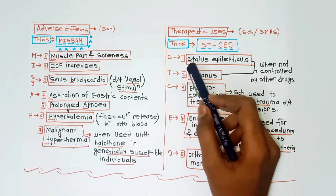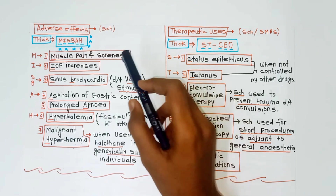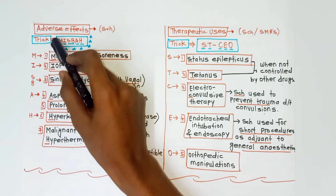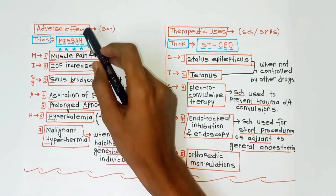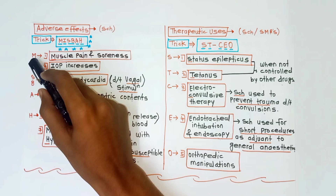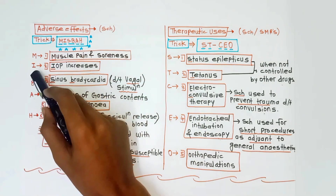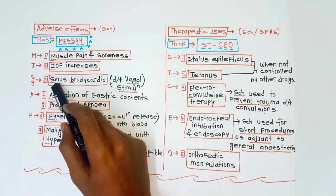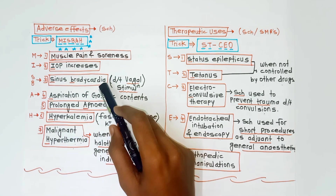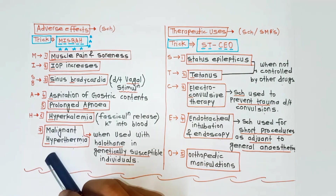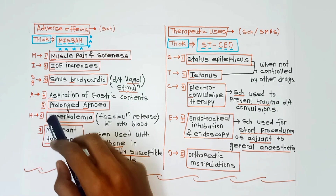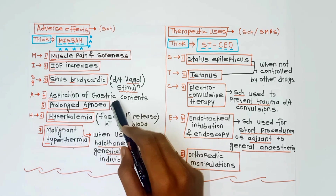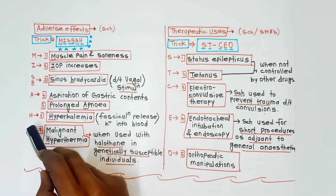The trick to remember adverse effects is MISBAH — Pakistan's former cricket captain. M for muscle pain and soreness; I for IOP increases (intraocular pressure increases); SB for sinus bradycardia, due to vagal stimulation by succinylcholine; A for aspiration of gastric contents and prolonged apnea.